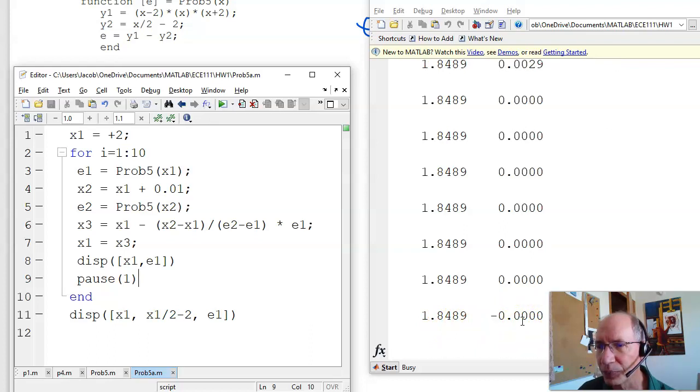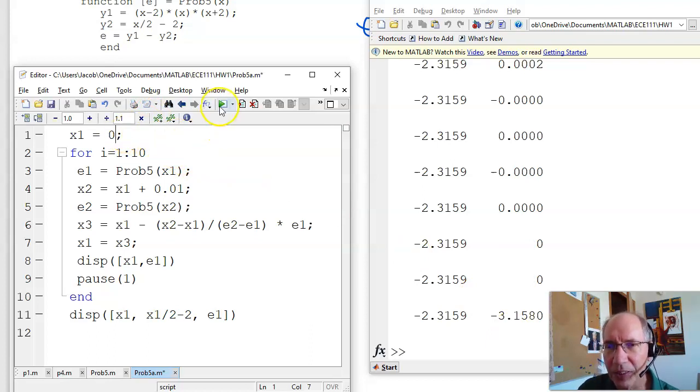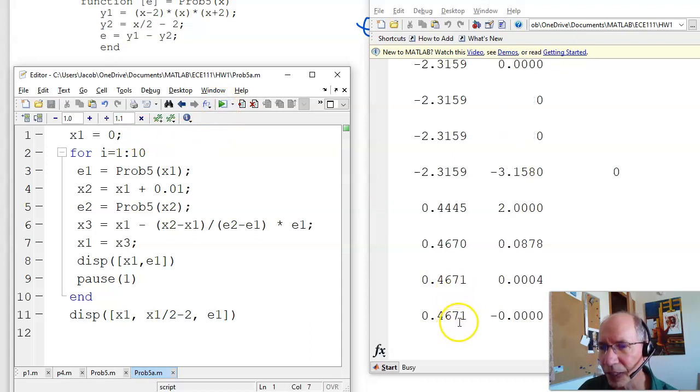Let's try minus two as my first guess. First guess, second guess, third guess. Here's the error. And this is Newton's method. Newton's method converges really, really fast. And if I make zero my first guess, there's second guess, third guess, fourth guess. Again, very quickly, the error converges to zero.